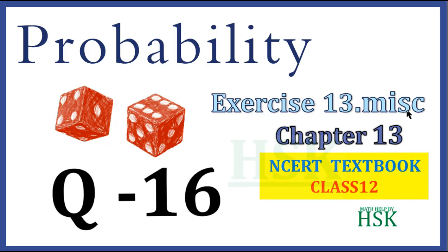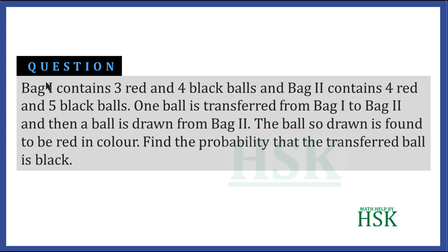This is question number 16 of the miscellaneous exercise of chapter 13, that is probability. The question is: Bag 1 contains 3 red and 4 black balls, and Bag 2 contains 4 red and 5 black balls. One ball is transferred from Bag 1 to Bag 2, and then a ball is drawn from Bag 2. The ball drawn is found to be red. Find the probability that the ball transferred is black.